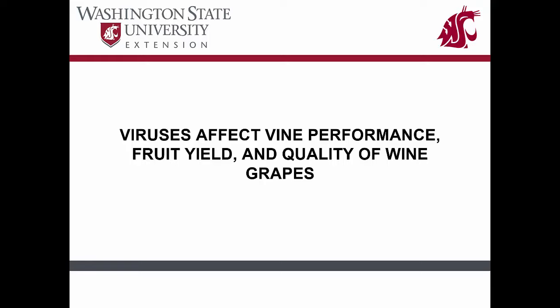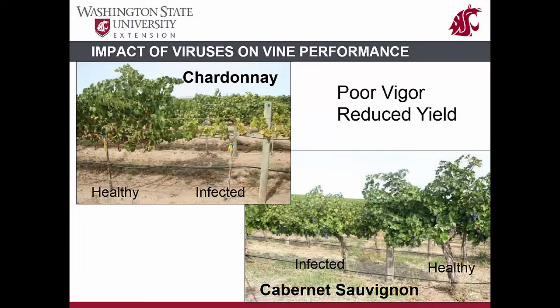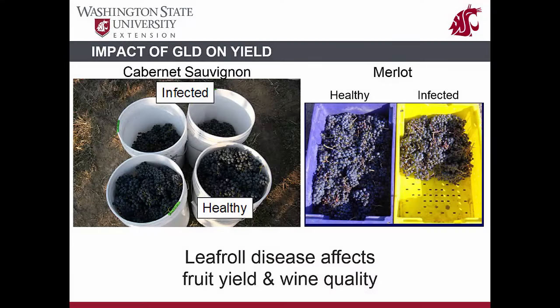The next few slides show how grapevine viruses can affect vine health and fruit and wine quality. Negative impacts can be seen in both red and white-fruited cultivars. Vine vigor and canopy growth are reduced in both red and white cultivars when infected with grapevine leaf roll disease. Infected grapevines develop weak trunks over time, leading to reduced lifespan and productivity. Infected vines have smaller leaves with less green pigment, meaning they are less efficient in photosynthesis and cannot produce enough sugar for the berries.